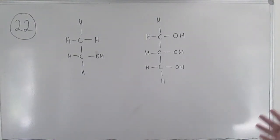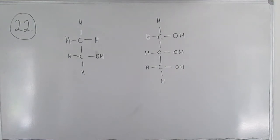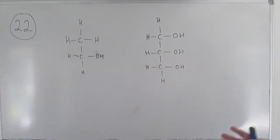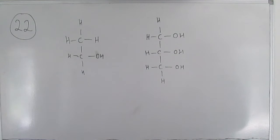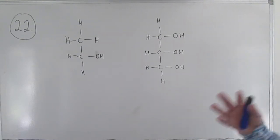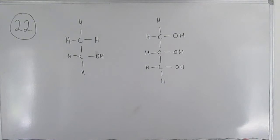Question 22 starts with the statement that alcohols have relatively low volatility because of their intermolecular bonds, and it asks you to explain those statements. When you get questions like this, the important thing is just not to repeat the words that were in the question. So if you're talking about intermolecular bonds, you can't just say 'bonds between molecules', because you haven't then explained the word 'bonds'.